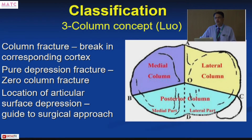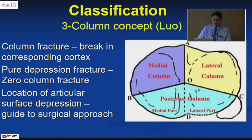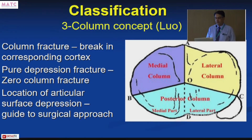Sometimes there may be only articular depression without a cortical break; these were called zero-column fractures, corresponding to Schatzker type III. The principle of Luo's classification was that every column with a cortical break had to be reduced and fixed, which helped with surgical planning.